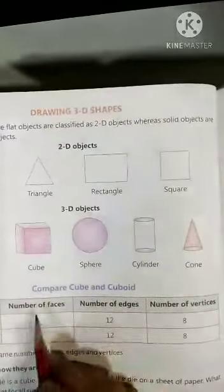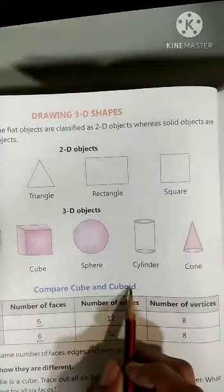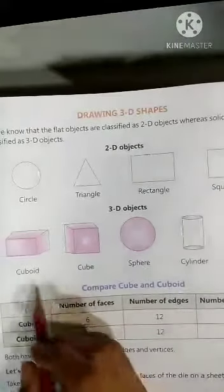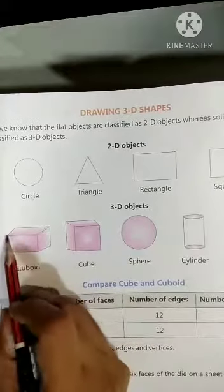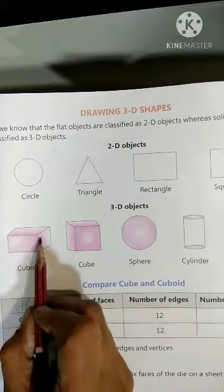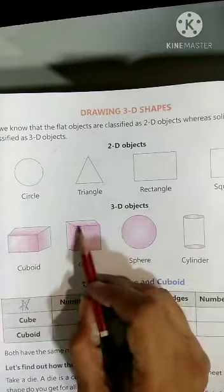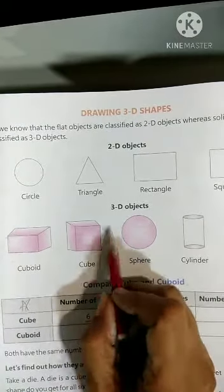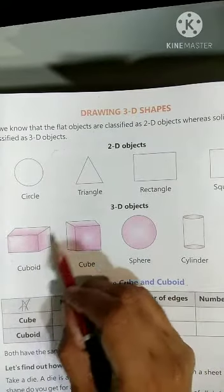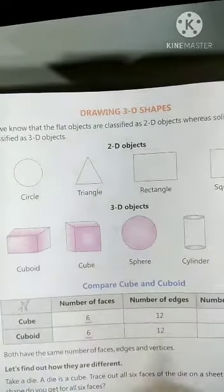Now children, we will compare cube and cuboid. So, here you can see the shape of cube and cuboid. Only the difference is that cuboid is made up of rectangle, and cube is made up of square. And cube, all the sides are equal, and cuboid, opposite sides are equal.